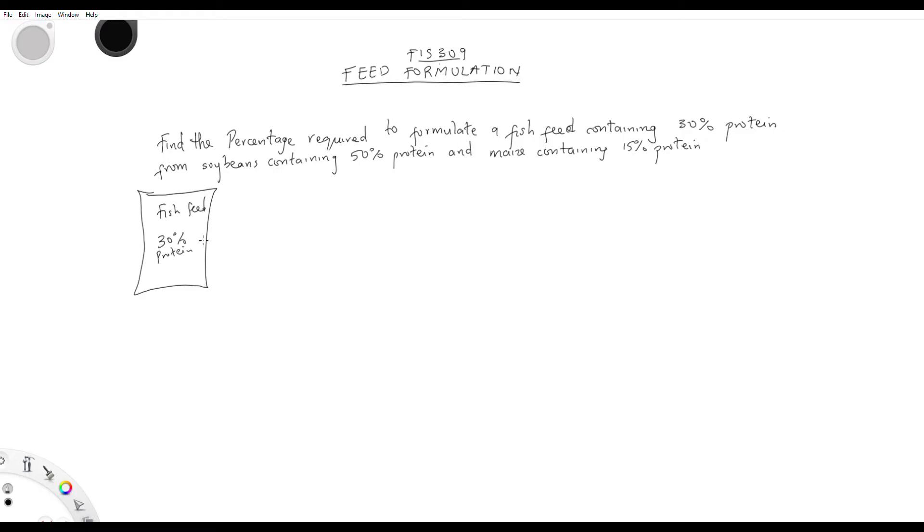Now let's solve this. How do you solve this? You solve it using the Pearson's method. So firstly, you write out the components which you are going to use to make the feed: soybeans, this is 50% protein, and maize, this is 15% protein.